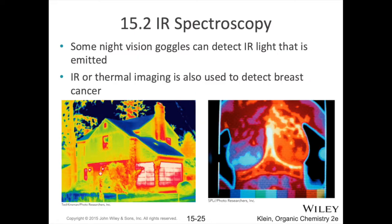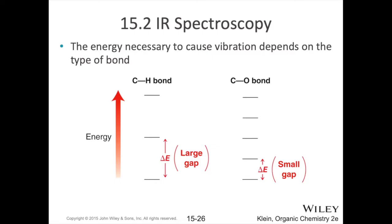Infrared imaging or thermal imaging works on the same principle — if you're familiar with night vision goggles, they work through infrared radiation coming off something. Even without visible light, night vision goggles can detect heat rising off images. Infrared spectroscopy works similarly: you shine infrared light on your sample, and your detector on the other side picks up what light makes it through the sample.